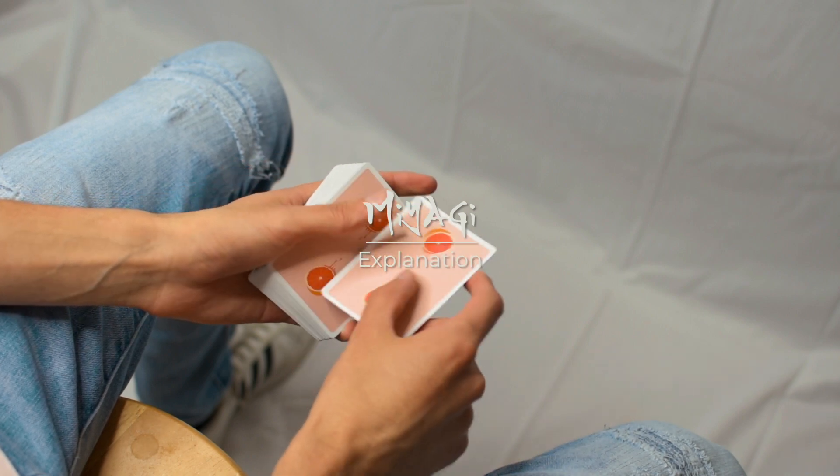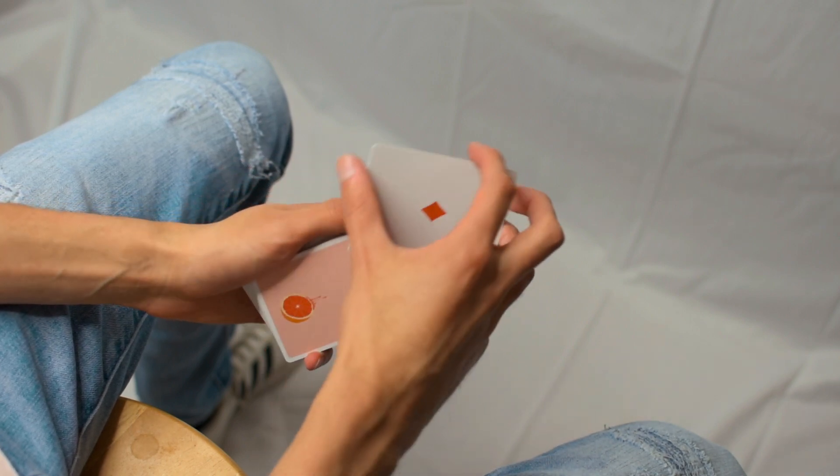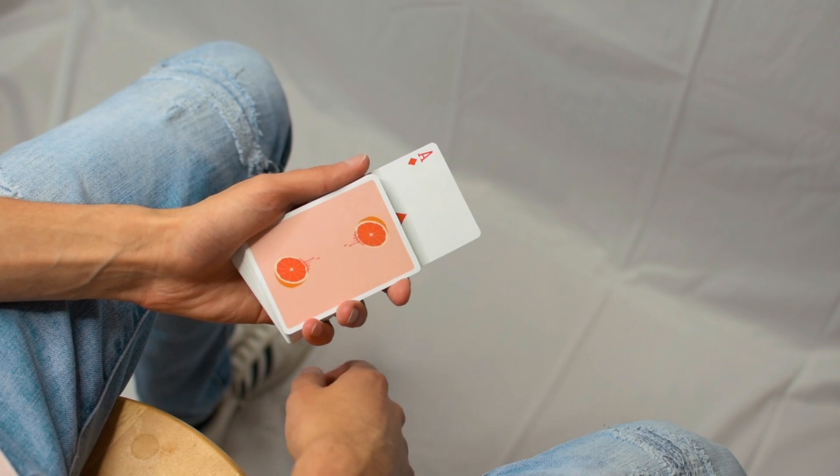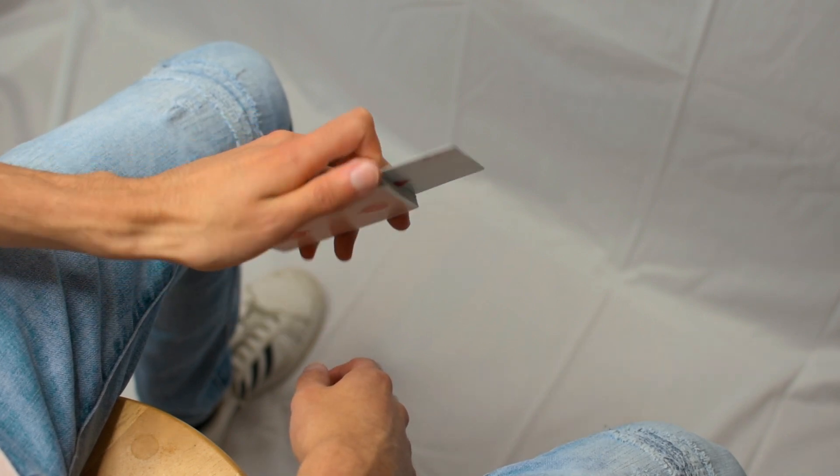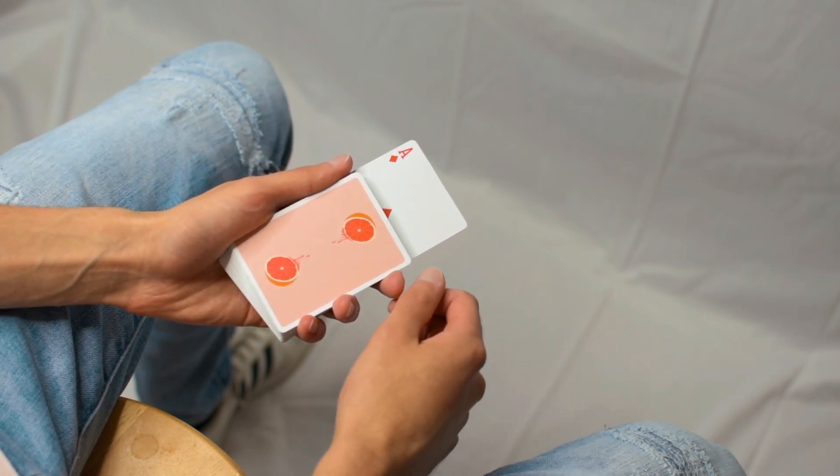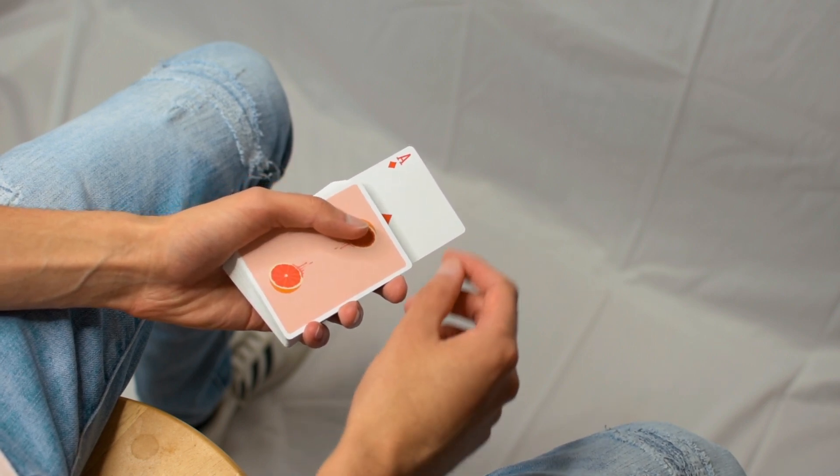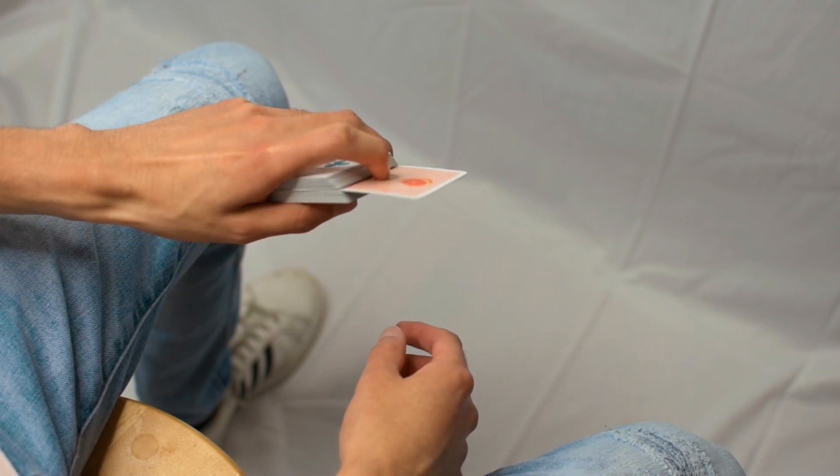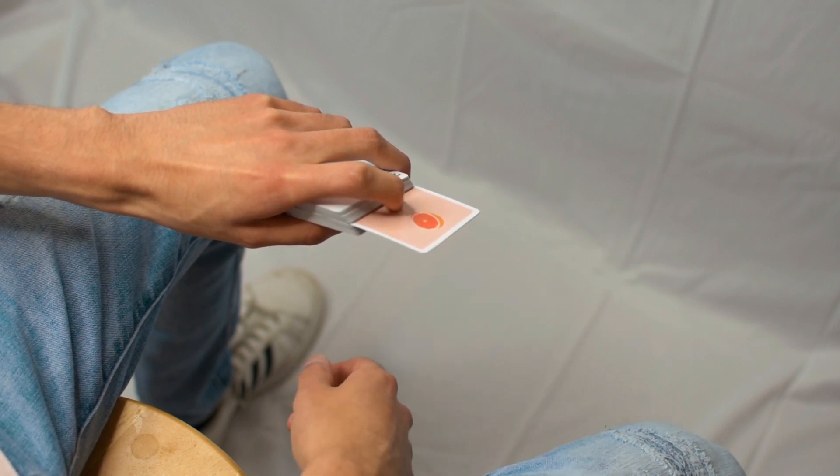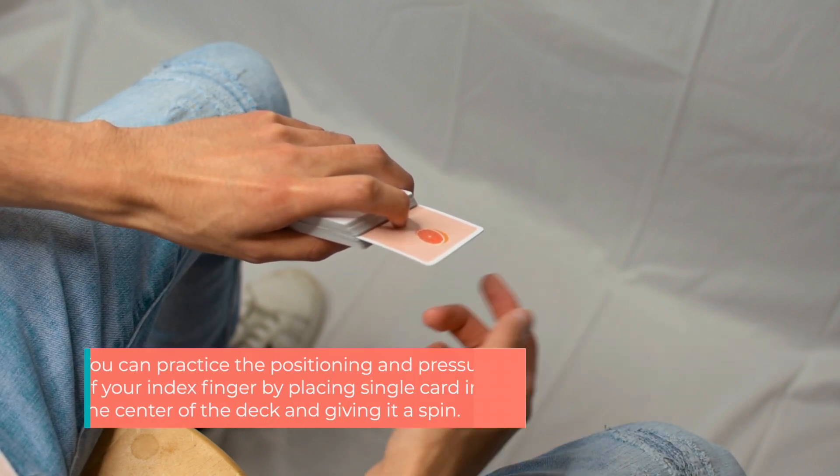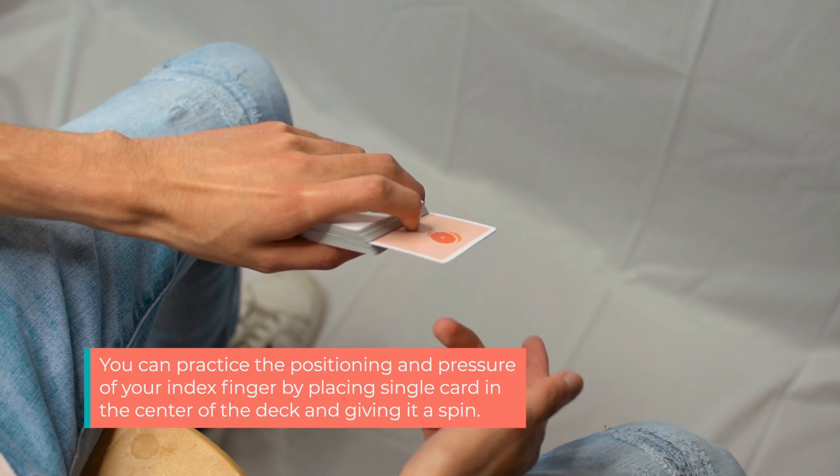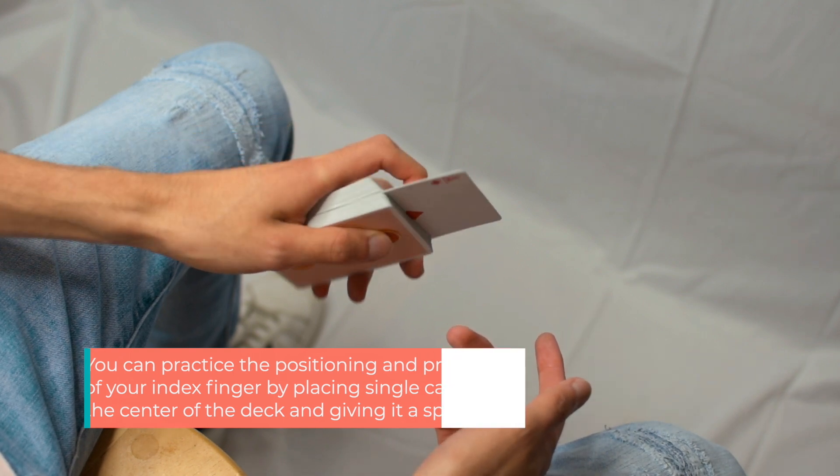To perform Miyagi, begin by getting a double lift and placing that double in the center of the deck. You'll want the card sticking out about a little more than halfway. Now place your fingers in the following positions. With your deck holding hand, contact the double with your index finger. This will act as a point of rotation for the card to spin on during the change, so you'll need to create a slight amount of upward pressure.